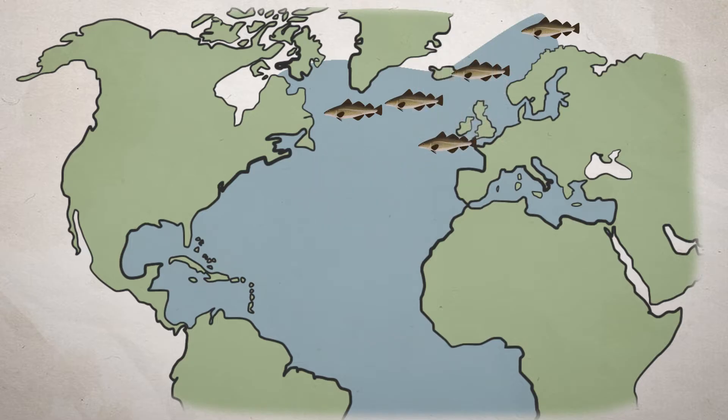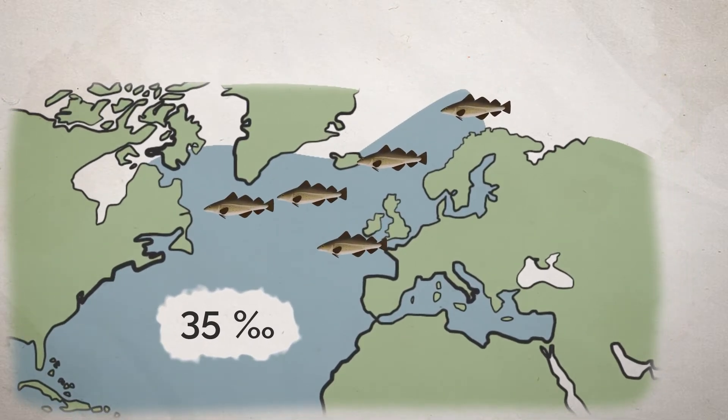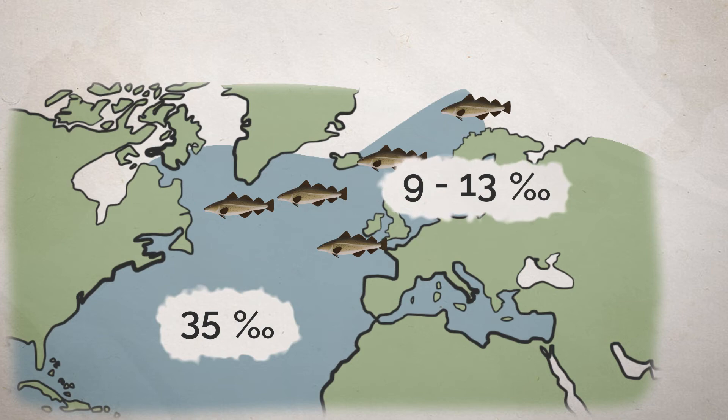Cod, regarded as a saltwater fish that thrives best with a salinity of around 35 parts per thousand, can also tolerate fresh water, such as that found in the Baltic Sea, where they live and spawn with salinity levels of 9 to 13 parts per thousand.